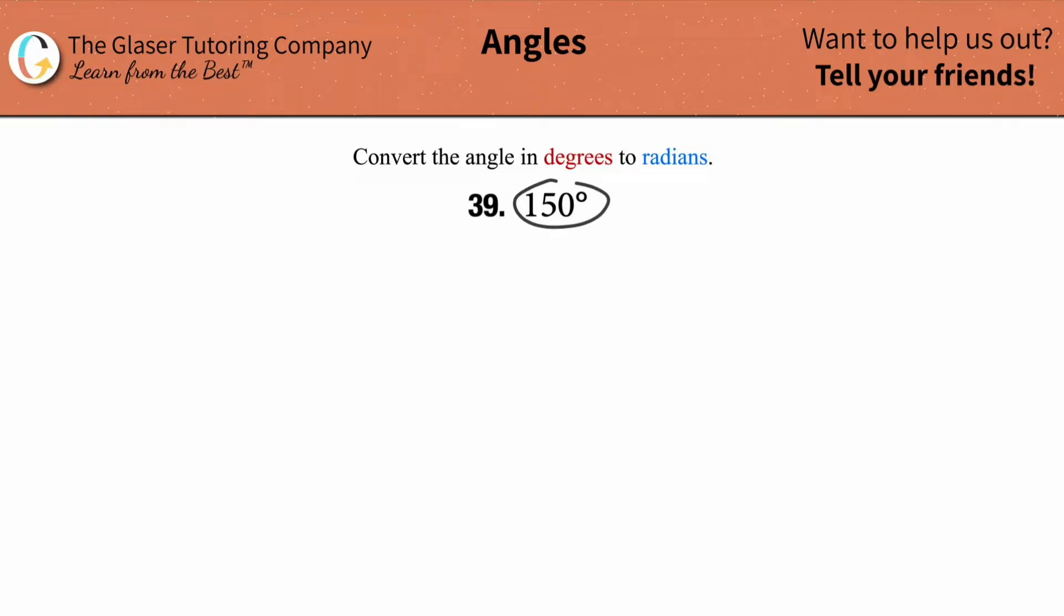So what is 150 degrees in radians? How do we figure it out? We need to know a known relationship between radians and degrees first.